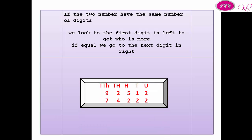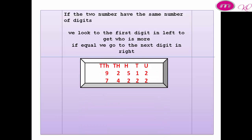Example: ninety-two thousand five hundred and twelve versus seventy-four thousand four hundred and twenty-two. We look first at the first digit on the left — nine is more than seven. That means the first number is more than the second number.